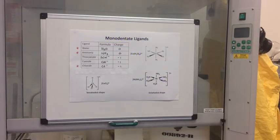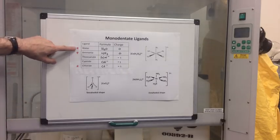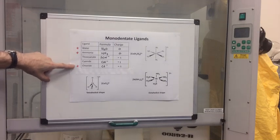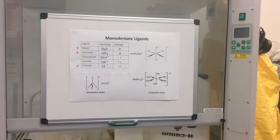We'll start with the simplest type of ligand and that's the monodentate ligand. We've got five examples in the table: water, ammonia, thiocyanate, cyanide and chloride. We're going to focus on water, ammonia and chloride as examples of monodentate ligands. The word monodentate literally means one tooth, but the explanation we need to give in an exam is that monodentate ligands form one coordinate bond with a transition metal ion.